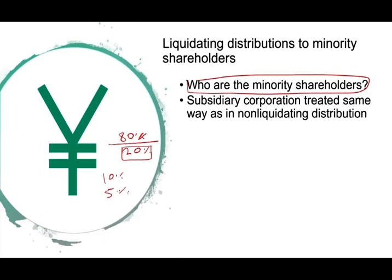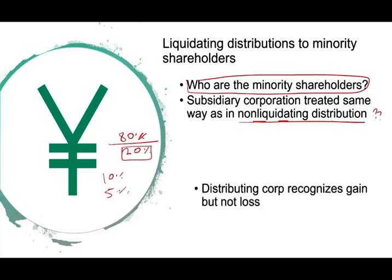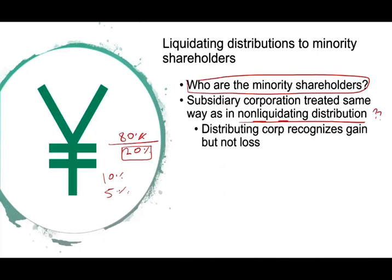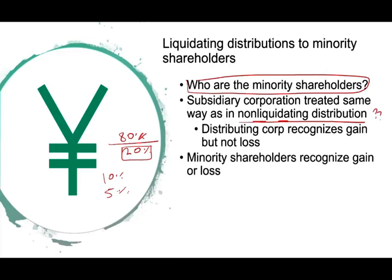When we do a distribution to a minority shareholder, it's treated exactly as a non-liquidating distribution. What does that mean? If it's a non-liquidating distribution, we would recognize the gain but not the loss. So if we have a gain, we can always recognize the gain, but we don't recognize the loss for the corporation. For the shareholder, however, the shareholder would recognize either a gain or a loss.